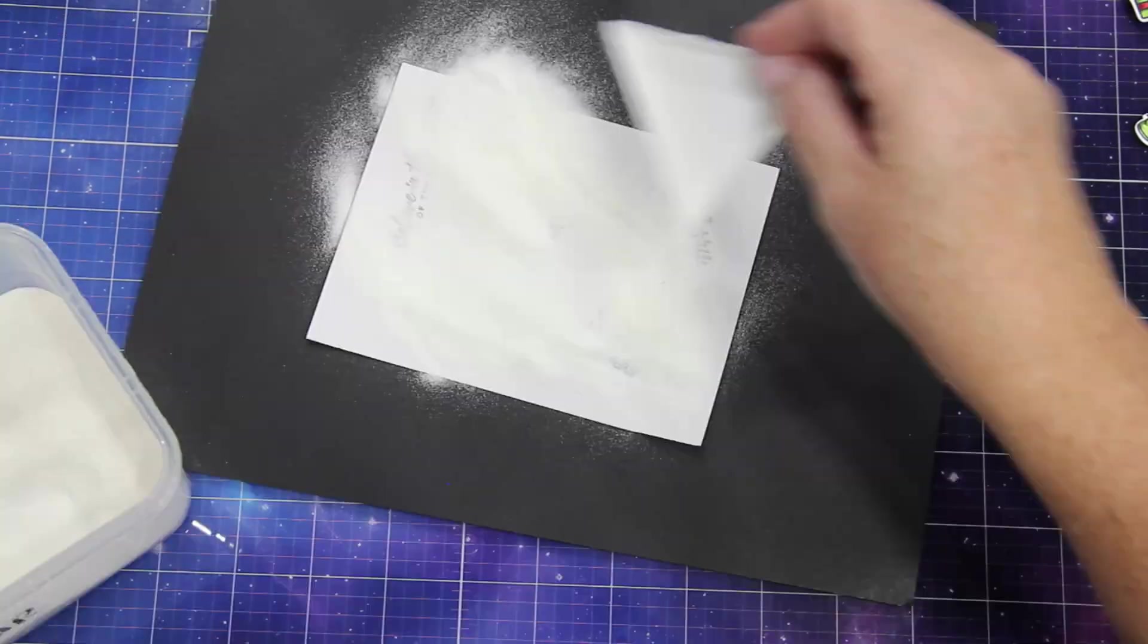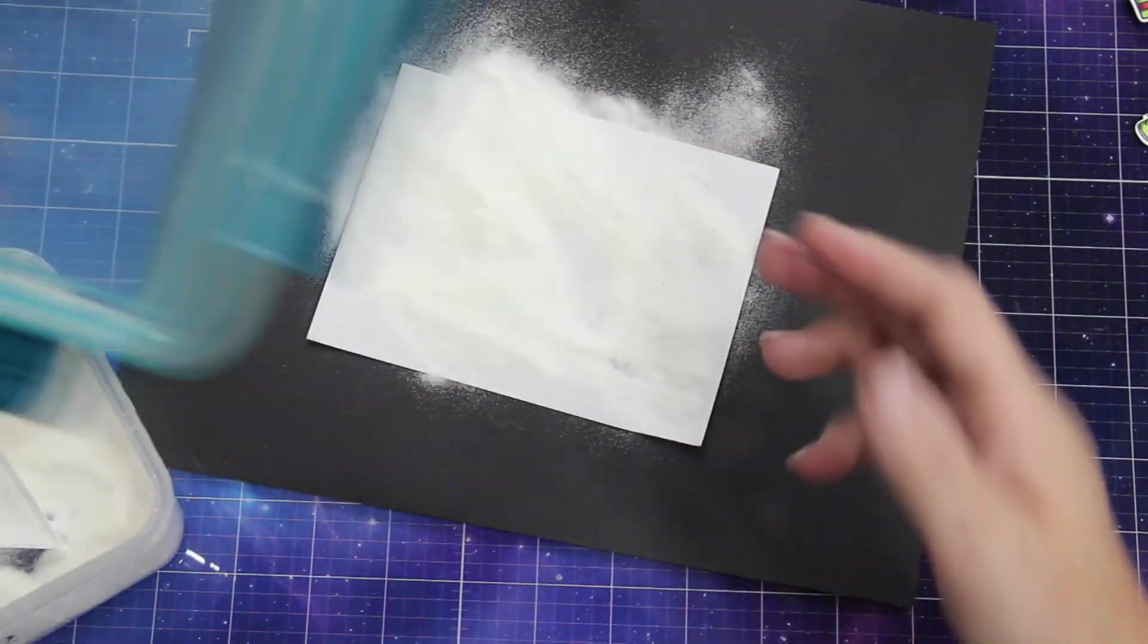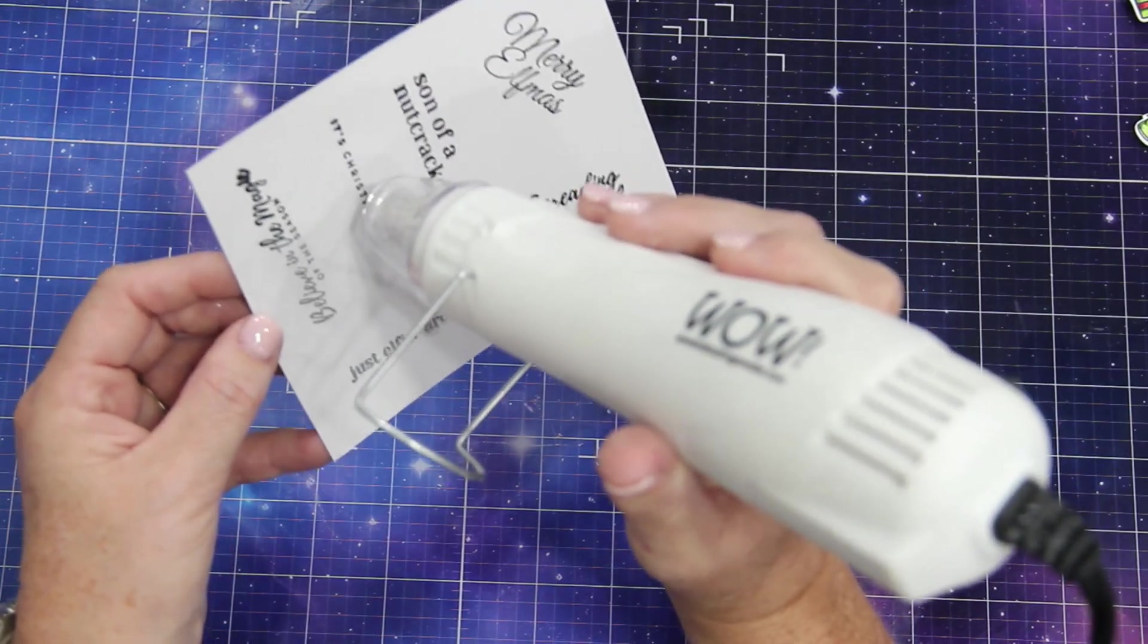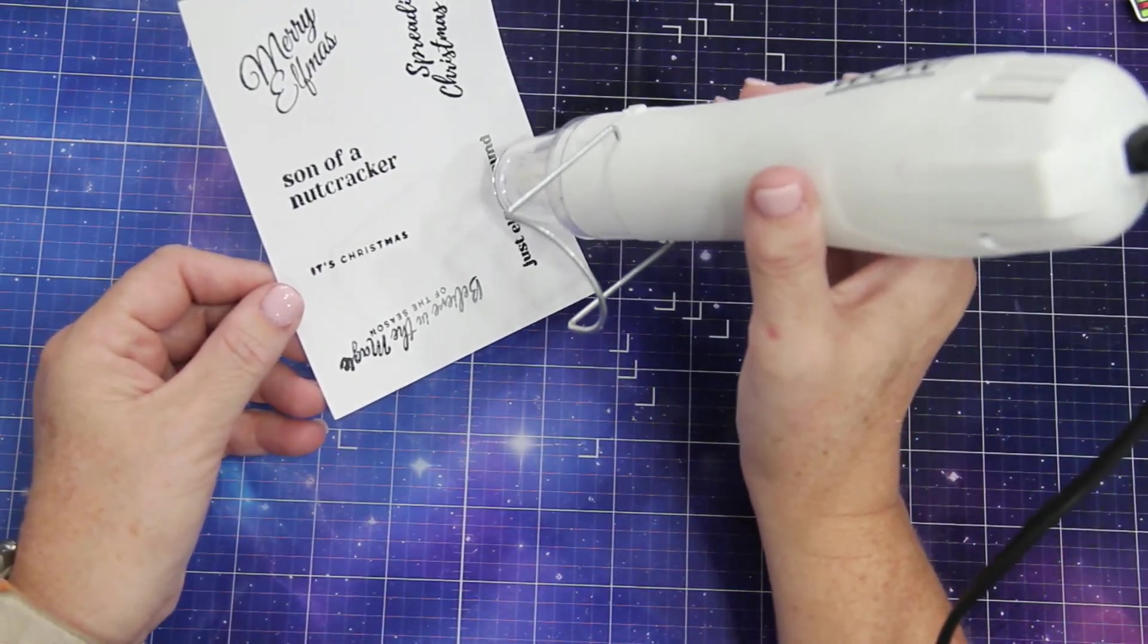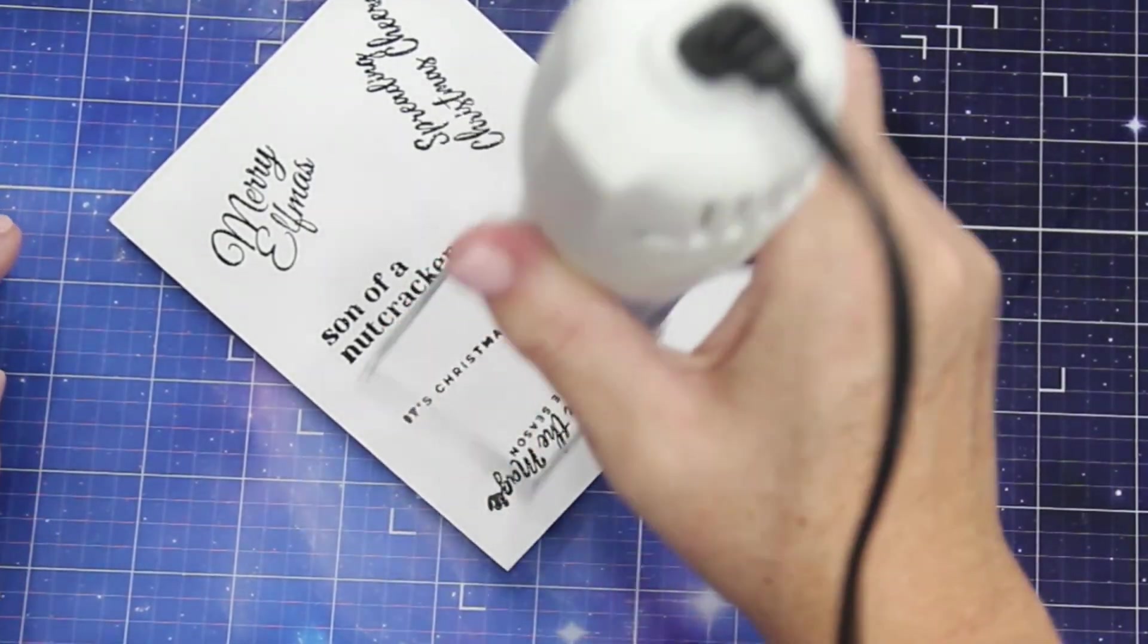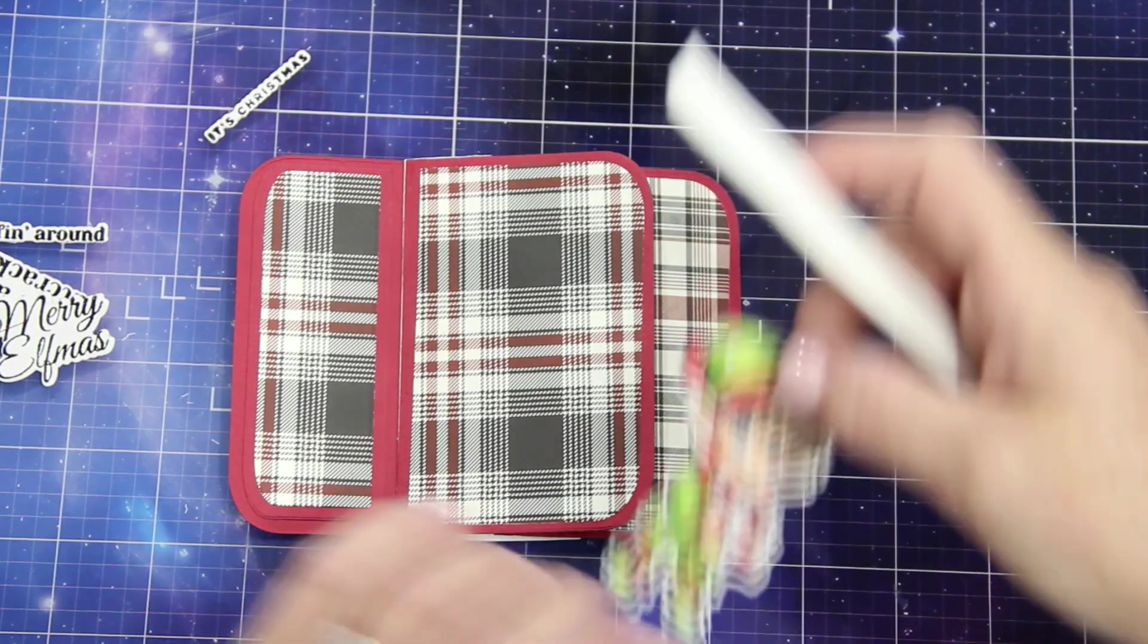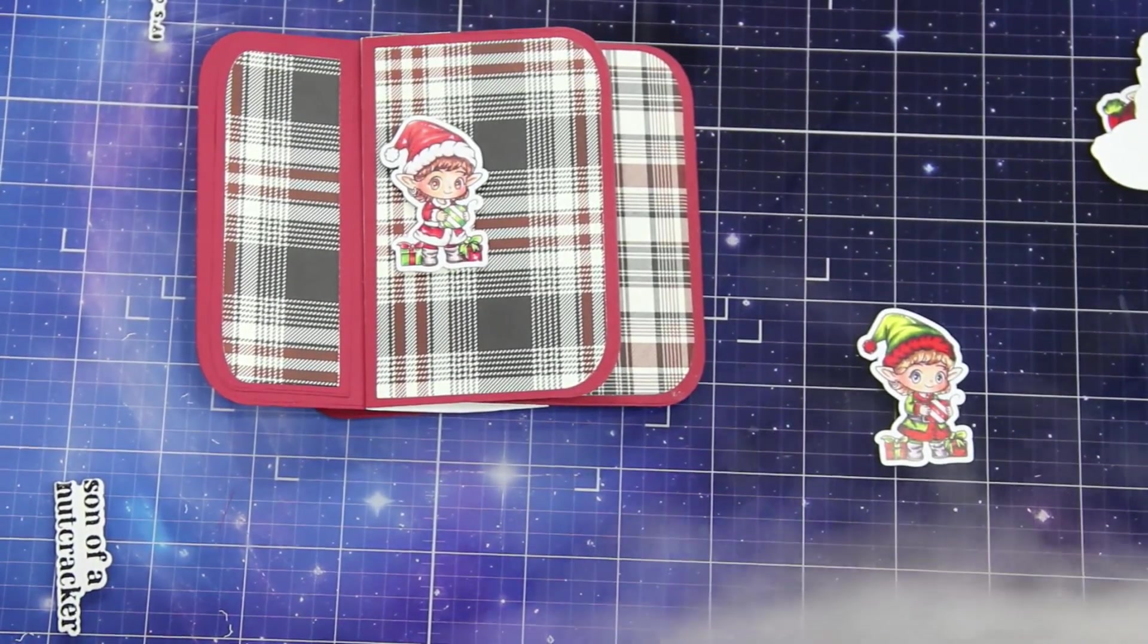Here, I am stamping all the sentiments from Elfin Christmas, and I used VersaFine Clear Nocturne, and then I'm embossing those in clear. And now you're seeing me heat set those, which is what embossing is. Now, what I like about the Elfin Christmas, one, it's super cute. It's got some snarky sentiments, but it's got some really cute sentiments, too.